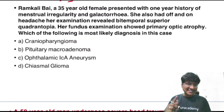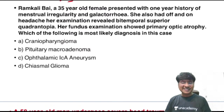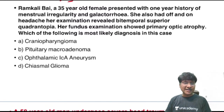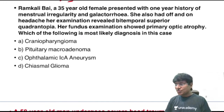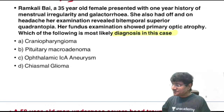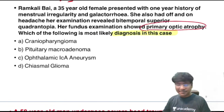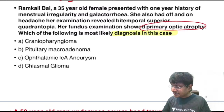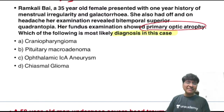Clinical scenario: a 35-year-old female with one-year history of menstrual irregularity, galactorrhea, and headache. Examination shows bitemporal superior quadrantanopia and primary optic atrophy on fundus exam. The diagnosis is pituitary macroadenoma.